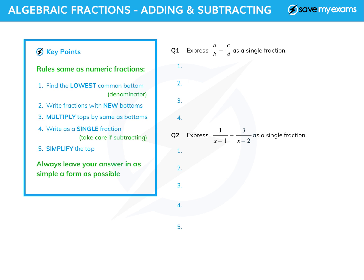The first thing we need to do is find the lowest common denominator. That is usually just the two denominators multiplied together. We'll see later on that sometimes we need to be careful, but if it's simple, then it's the two things multiplied together.